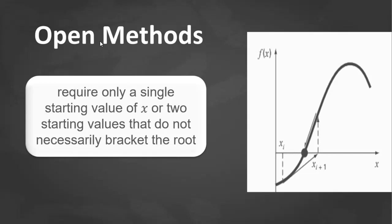In contrast to that, are the open methods which are based on formulas that require only a single starting value of x or two starting values that do not necessarily bracket the root. As such, they sometimes diverge or move away from the true root as the computation progresses. However, the advantage for open methods is that when they converge, they usually do so much more quickly than bracketing methods.